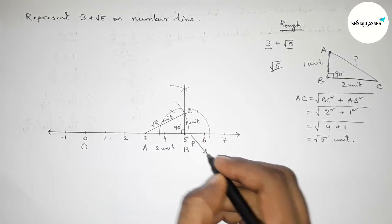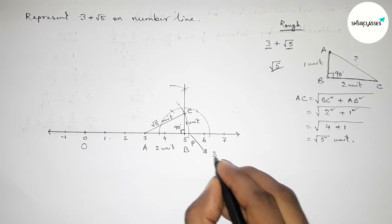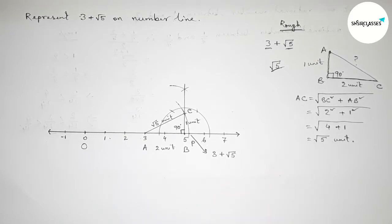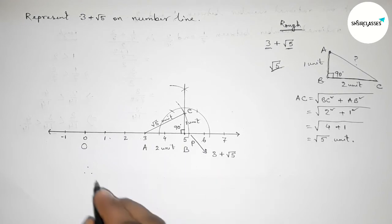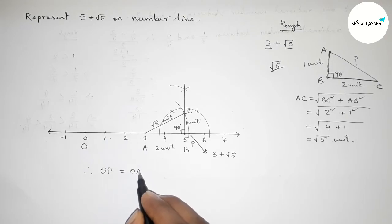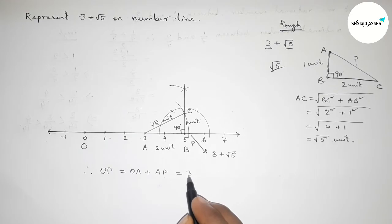So therefore, now we can write OP, so OP equal to OA plus AP. And we know that OA equals 3 units plus AP equals root 5. So 3 plus root 5 units. So that's all, thanks for watching. Please share it with your friend.